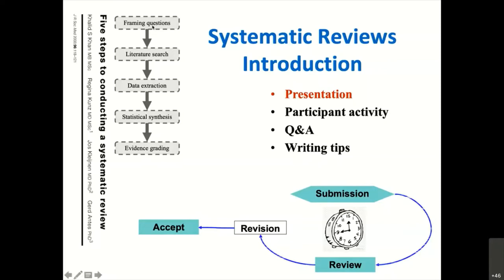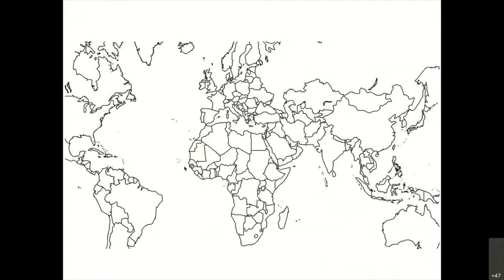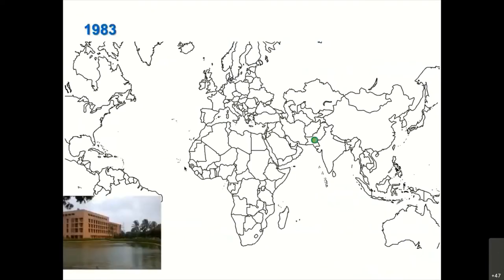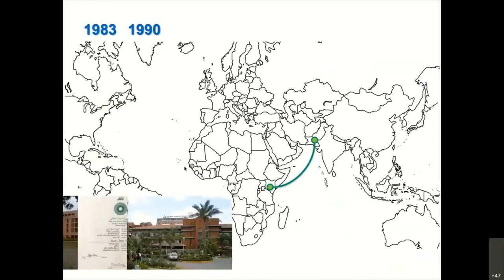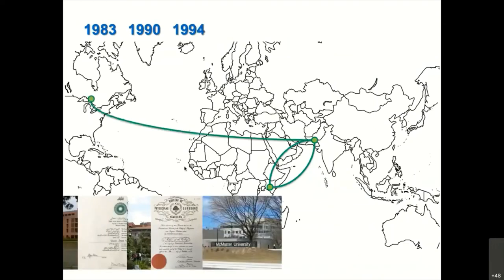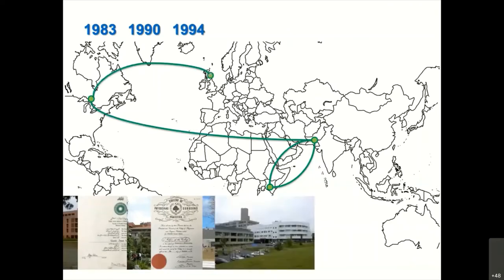Here are the five differences of systematic review taken from this publication, which is a very brief summary of the book that was referred to just a moment ago. If you don't mind, I'll expand a little bit on my own history. I started medical school in 1983 in Pakistan. I had an opportunity to work in Kenya, started my career as a gynecologist, returned to Pakistan, then went to McMaster University in Canada, and then I worked in the UK for several years.